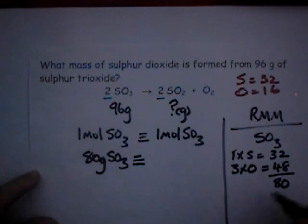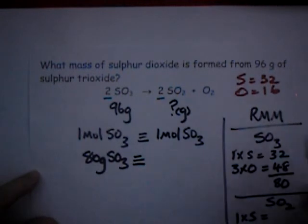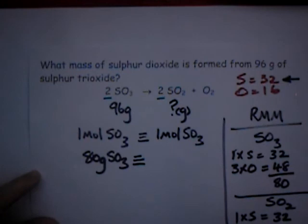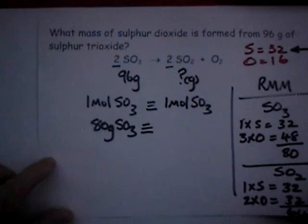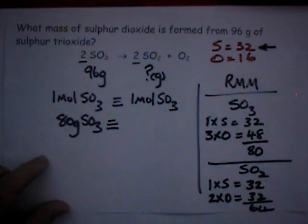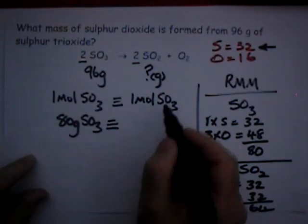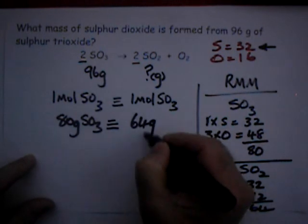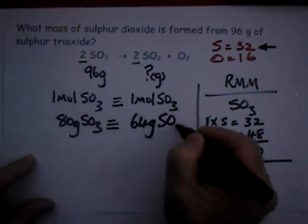A mole of SO2. A mole of SO2 has got one S, which contributes 32 to the relative molecular mass. Two oxygens. Two sixteens, 32. And that gives us a total of 64. So one mole of SO2, excuse me, SO2, is 64 grams.